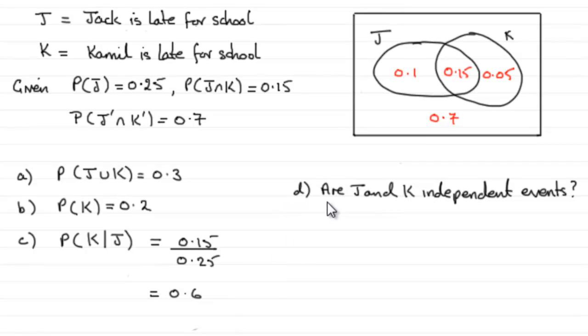Now in this part, Part D, we're asked to find out whether J and K are independent events.